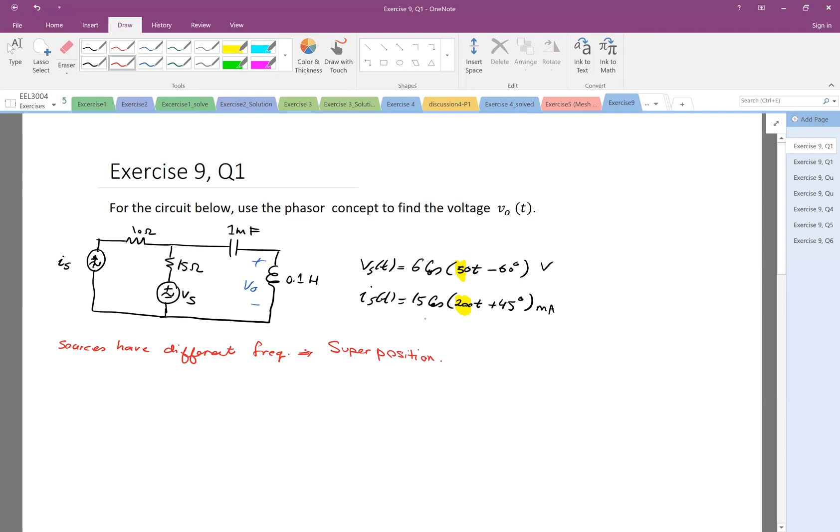But before that, let's also convert the sources to the phasor version. So Vs is 6 cosine with the angle negative 60 degrees, and Is is 15 milliamps with the angle of 45 degrees. I will remember that for this source, omega is 50 radian per second, and for the other source, the frequency is 200 radian per second.